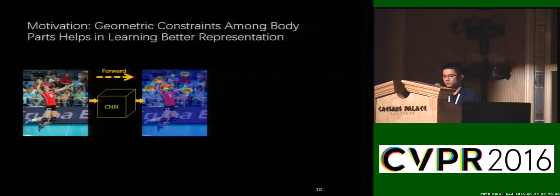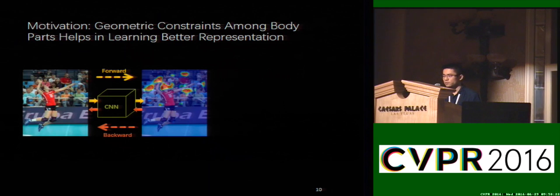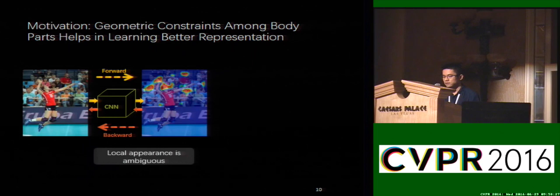Here we show how our method works. If we train the deep models without considering the global pose consistency, many high-response regions for unannotated people will be produced, and the error will be back-propagated to update the model parameters, which is inappropriate. That's why we claim that the local evidence is weak and ambiguous.